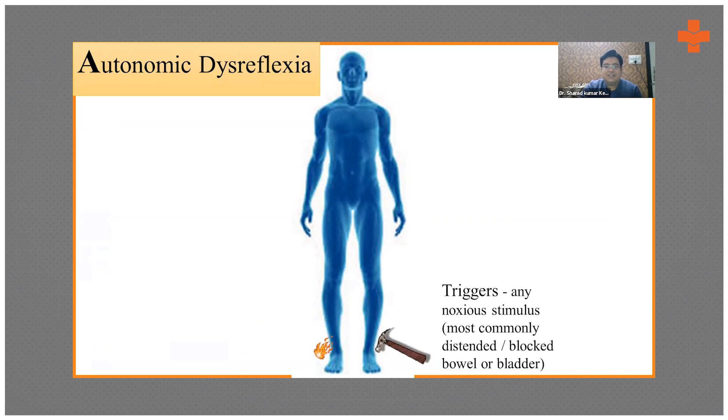This happens because of triggers like noxious stimulus, mostly like distended bowel or bladder, kinking tubes, Foley catheter, or a new pressure ulcer which is forming, or new ingrown toenails. These all are triggers which cause autonomic dysreflexia.